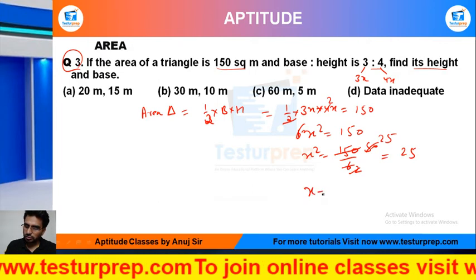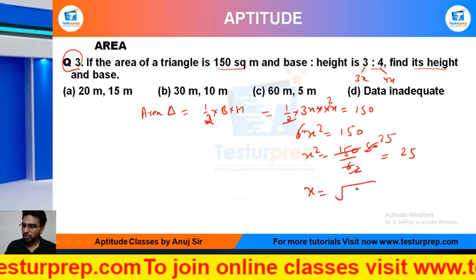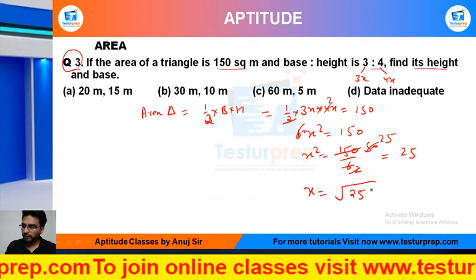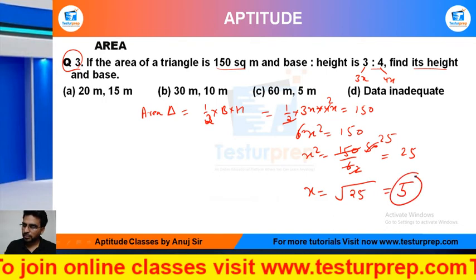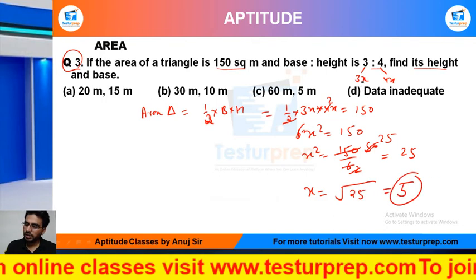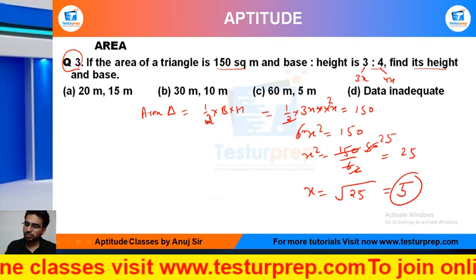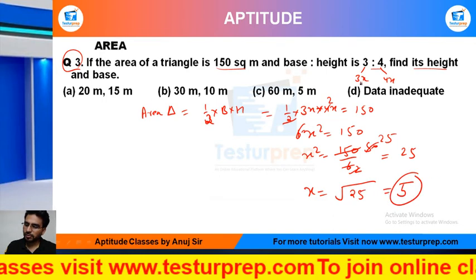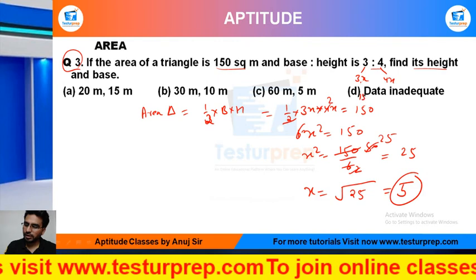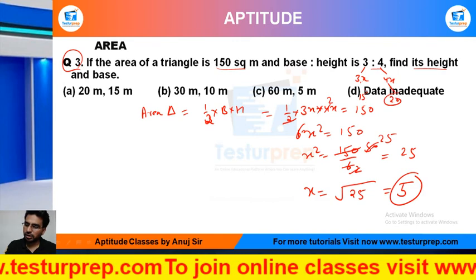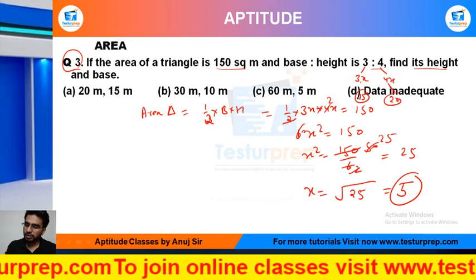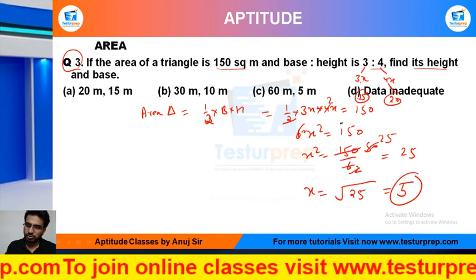So x is equal to the square root of 25, which equals 5. Substituting x equals 5: the base becomes 3 times 5 equals 15, and the height becomes 4 times 5 equals 20. So 15 and 20 will be my answer.